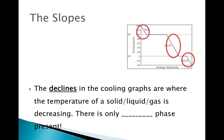On a decline in the cooling graphs, this is where the temperature of a solid, liquid, or gas is decreasing. And once again, on the slopes, even though we're decreasing, there's only one phase present. So either we have a solid, liquid, or a gas whose temperature is dropping, meaning that the particles are moving slower as heat is being taken away.